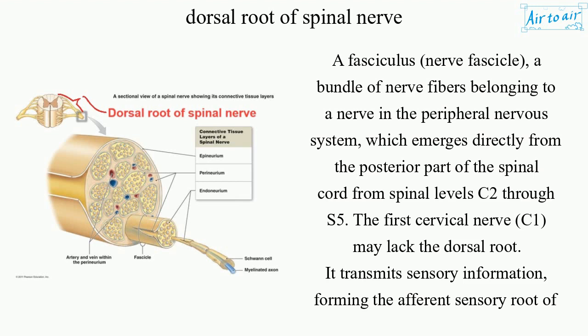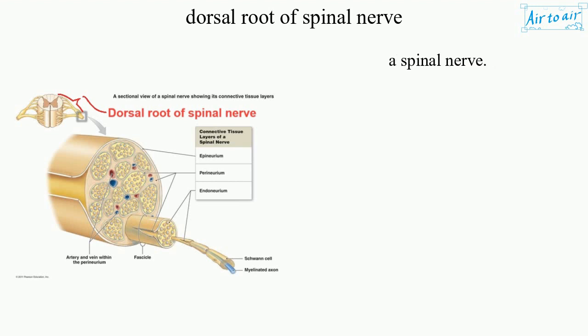The first cervical nerve, C1, may lack the dorsal root. It transmits sensory information, forming the afferent sensory root of a spinal nerve.